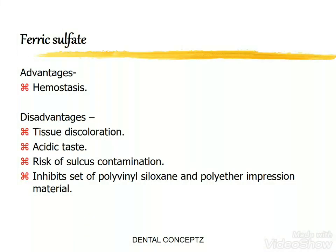The advantage of ferric sulfate solution is that it provides hemostatic action. The disadvantages are that ferric sulfate causes tissue discoloration, it has an acidic taste, there is risk of sulcus contamination, and it inhibits the set of polyvinyl siloxane and polyether impression materials.